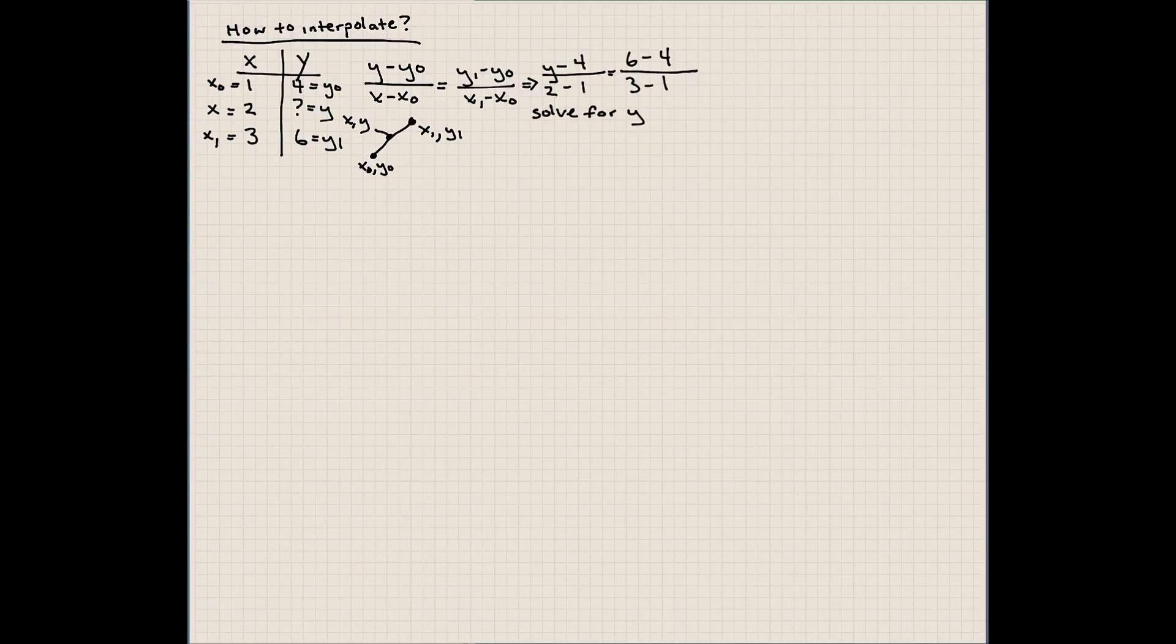This is equal to y₁, which is 6, minus y₀, which is 4, divided by x₁, which is 3, and x₀, which is 1. So we can solve for y: y minus 4 equals 2 over 2 times 1, so this is equal to 1, and y is equal to 5.